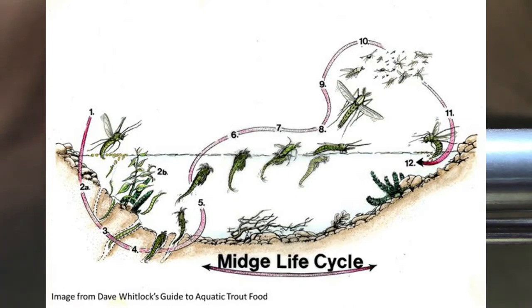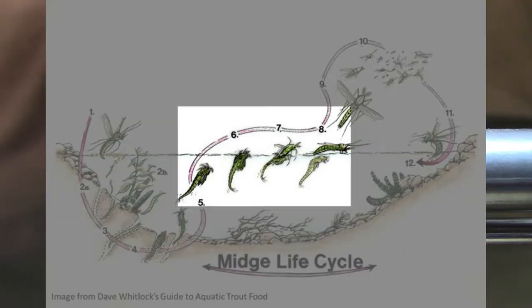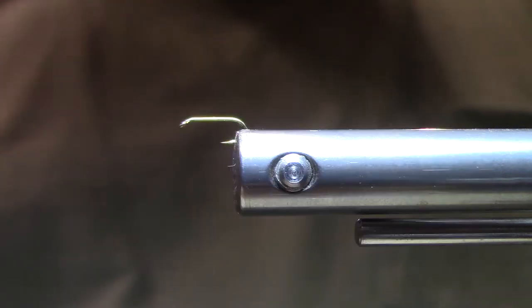They get kicked up, they get swept downstream by the currents, the fish will eat them. But what's really one of the fish's favorite things to eat are the pupae. Because once the larva turns into the pupa, it has to swim up to the surface, it gets stuck in the film, and the adult emerges from the pupa.